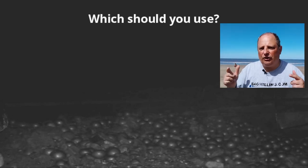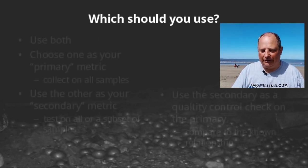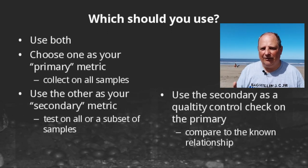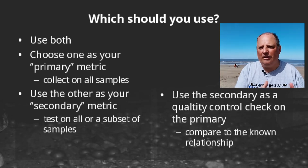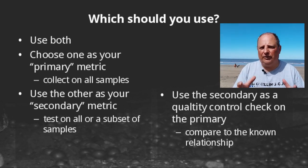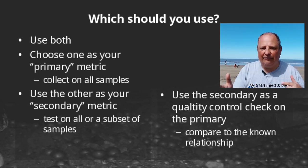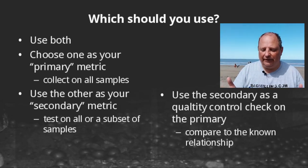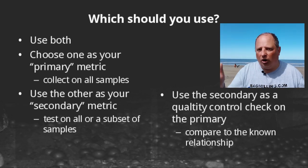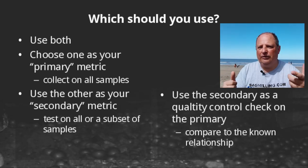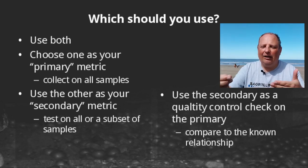So which test should you use when setting up your own grindability program for your project? The answer is: use both. There are consultants that use one technique or the other or both. Choose one as your primary method for sizing your mills — whichever test your consultant recommends based on their models and equations. Then use the other one as a backup and quality control check. You don't have to run the secondary test on all samples — you can do it on a subset, say every second or third specimen.